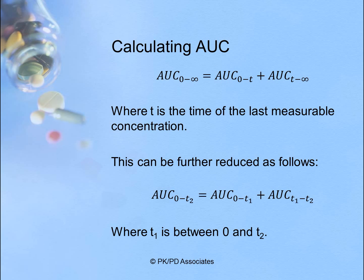To calculate the AUC, we're going to go through a few mathematical derivations. The first is that the AUC from zero to infinity can be divided up into the AUC from zero to T, plus the AUC from T to infinity, where T is the time of the last measurable concentration. So you can see that AUC is additive — you can cut it into pieces and add it back together to get the whole.